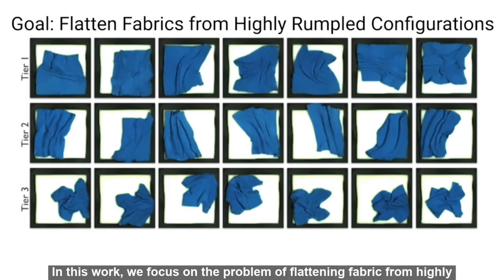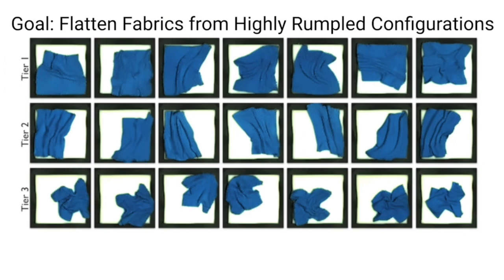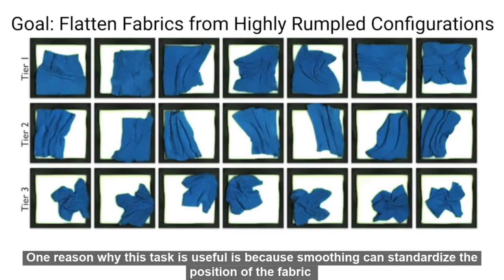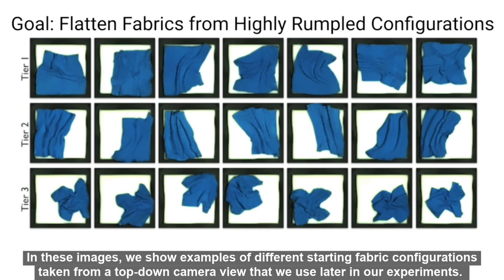In this work, we focus on the problem of flattening fabric from highly rumpled initial configurations such as those that you see here. One reason why this task is useful is because smoothing can standardize the position of the fabric and often makes it easier to perform downstream tasks such as folding. In these images, we show examples of different starting fabric configurations taken from a top-down camera view that we use later in our experiment.